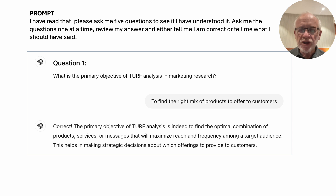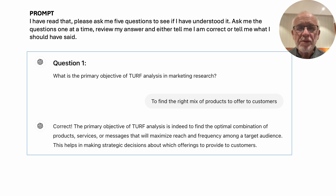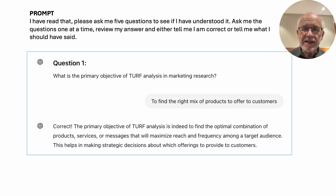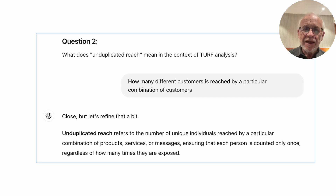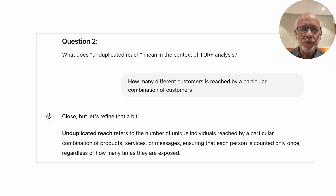The first question it asks is: what is the primary objective of TURF analysis in marketing research? I type in: to find the right mix of products to offer to customers. And it says yes, kind of reiterates what I've said - that's fine. I nearly didn't keep this example but I decided it's really quite useful.